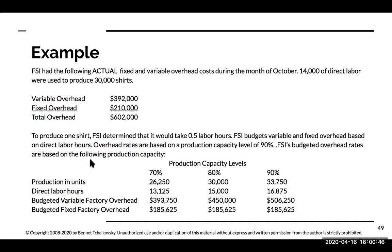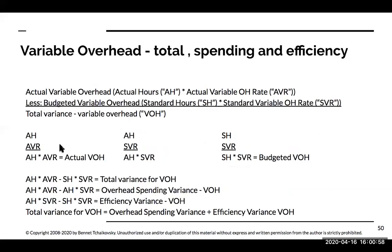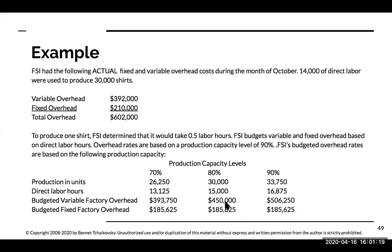We're going to be using the actual hours or the budgeted hours that we actually spent or should have spent making that quantity. We're going to take the actual direct labor hours and multiply by the actual variable overhead rate, and this will tell me how much I actually spent. I then compare this to my budget of $450,000, and then look at the variances.